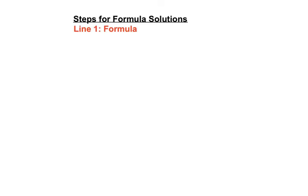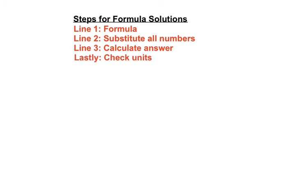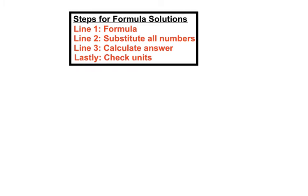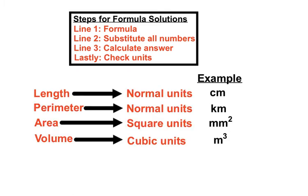It's a formula-based question, so we put the formula on the first line, we substitute all the numbers into the formula from the question, we calculate our answer, and we think carefully about the units we use. These were both area questions, so they had square units. We were looking at area, so we used square units for our answers.